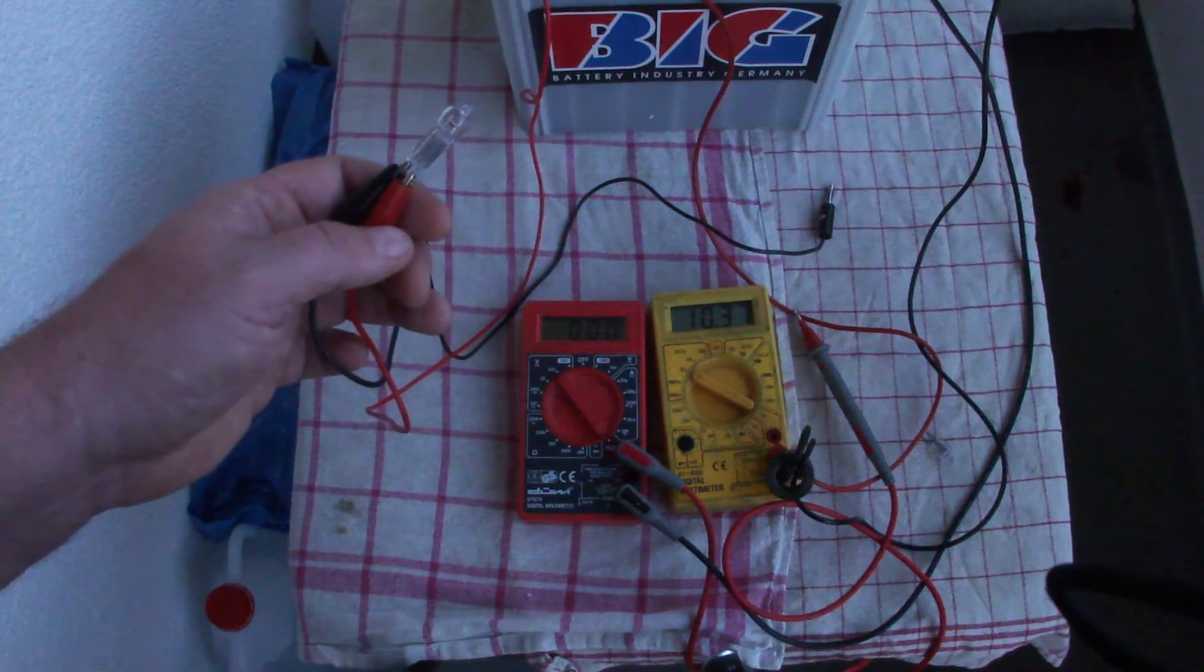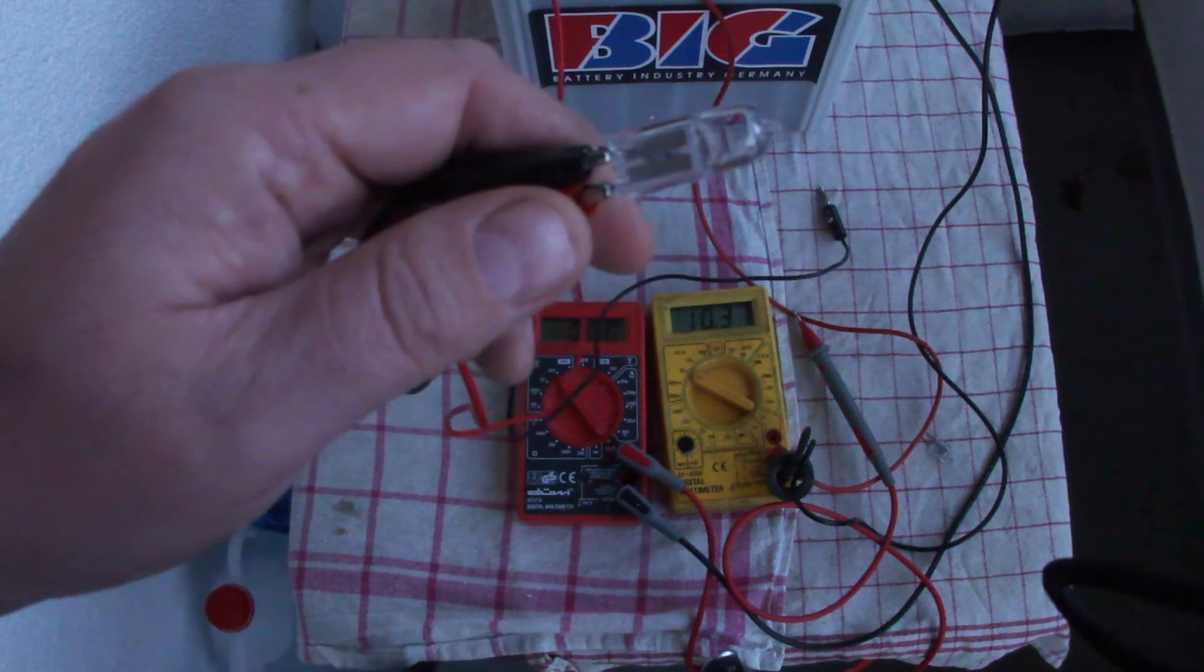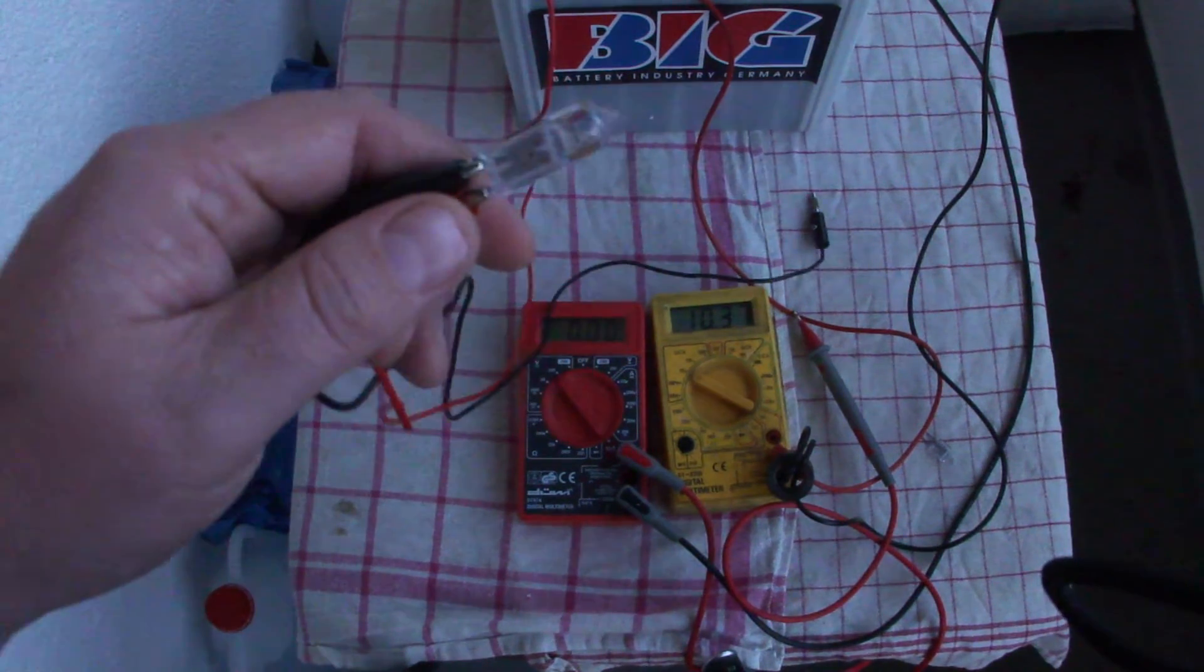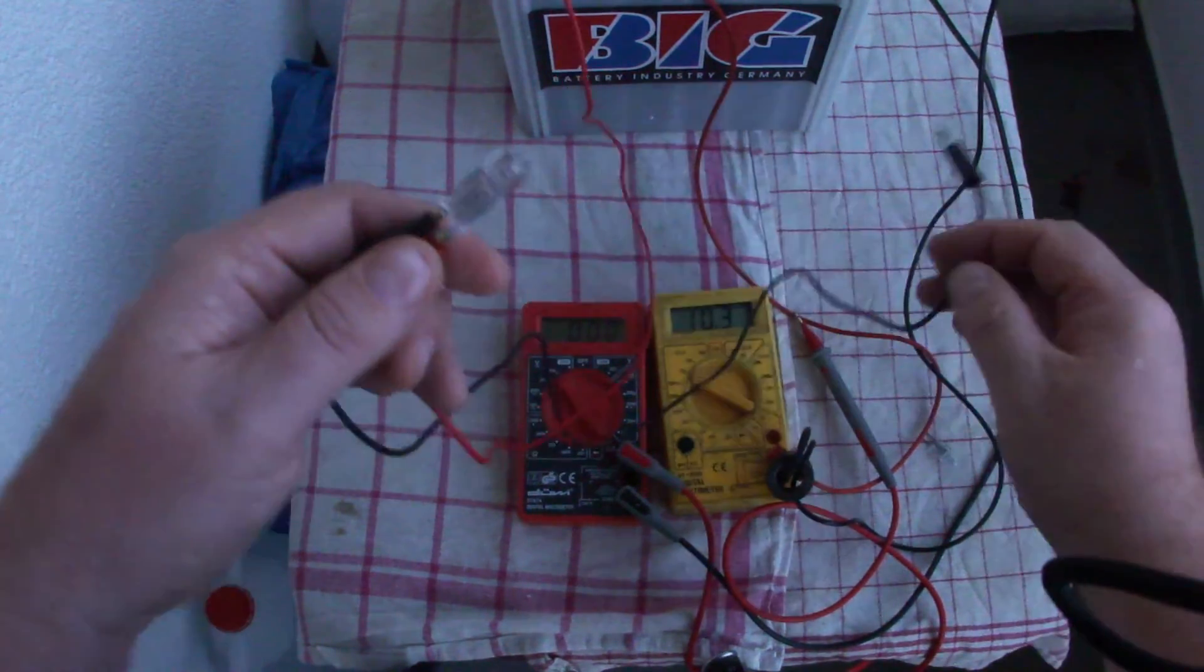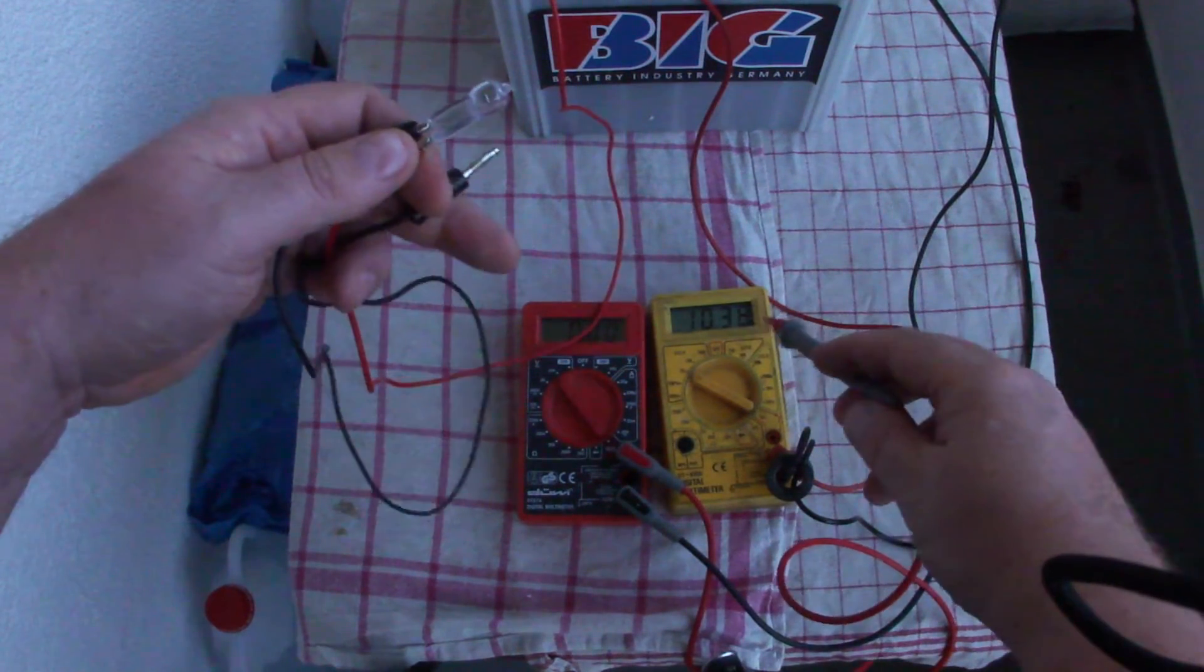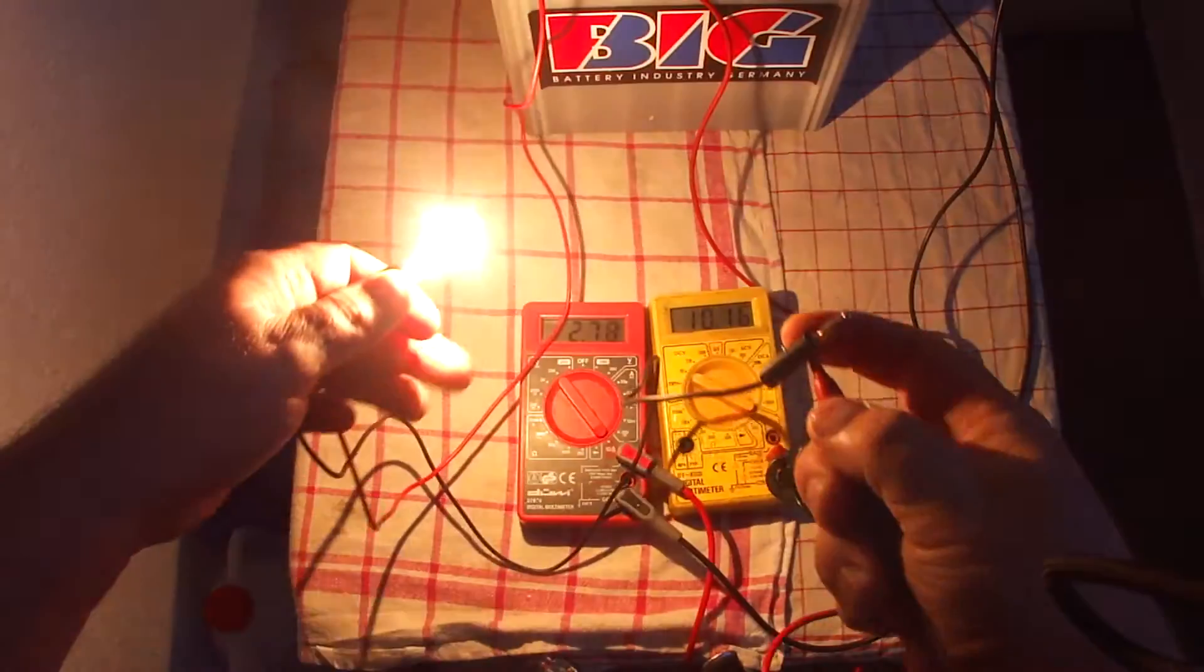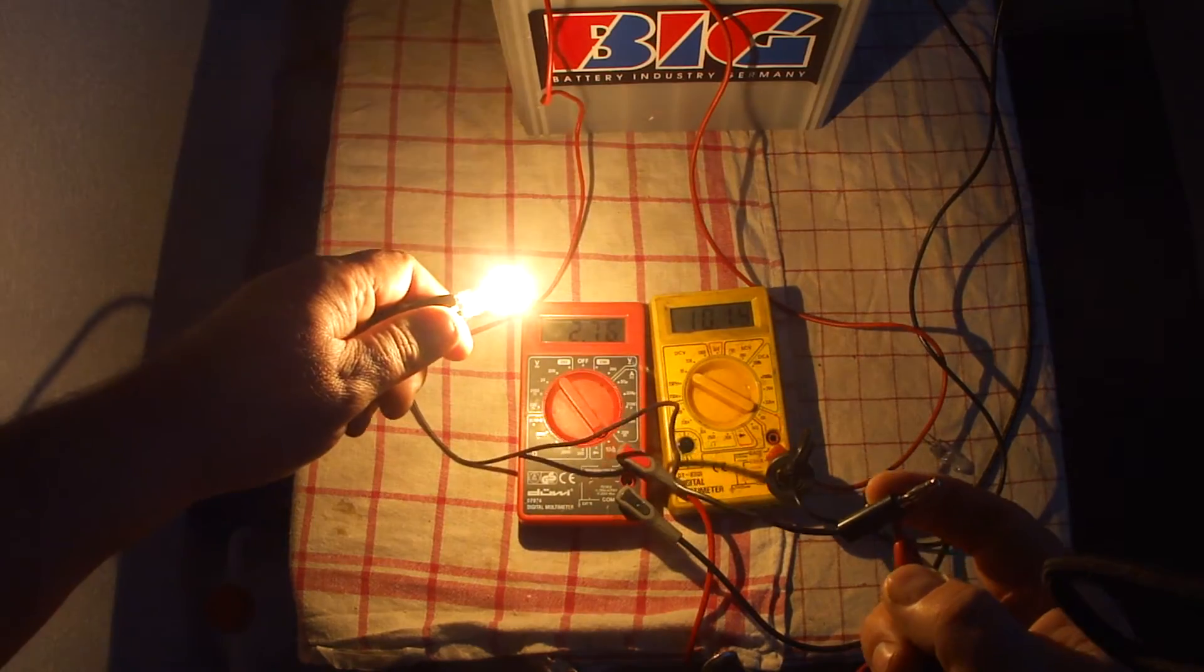Here's another test with a 35 watt halogen bulb. The voltage is now at 10.38 volts and on the left is the current meter, if you can see that.